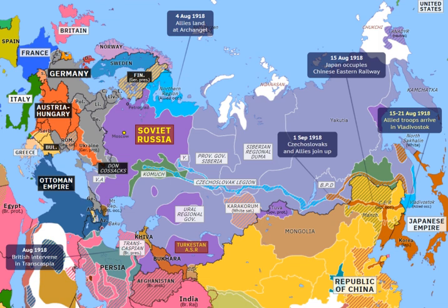The Allied powers withdrew in 1920. The Japanese military stayed in the maritime provinces of the Russian Far East until 1922 and in northern Sakhalin until 1925, following the signing of the Soviet-Japanese Basic Convention in Beijing, in which Japan agreed to withdraw its troops from Russia. In return, the Soviet Union agreed to honor the provisions of the Treaty of Portsmouth.